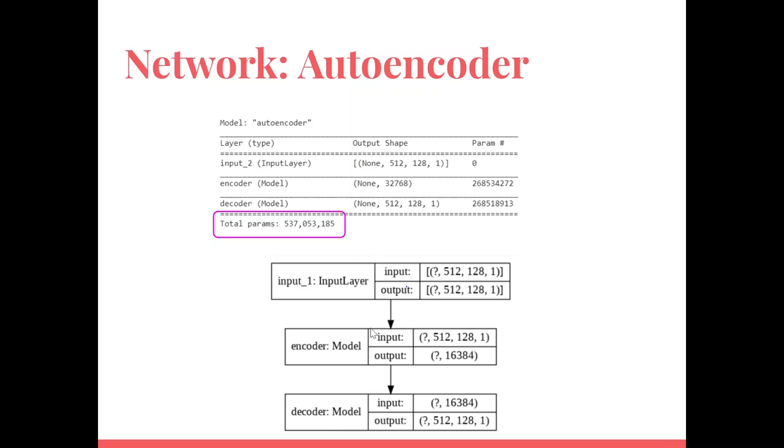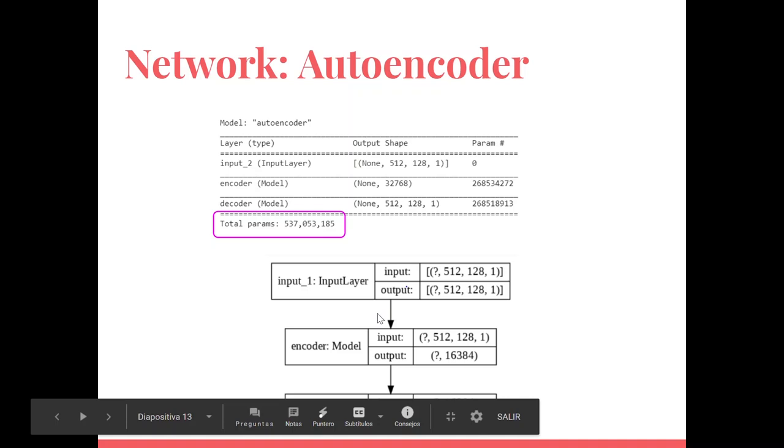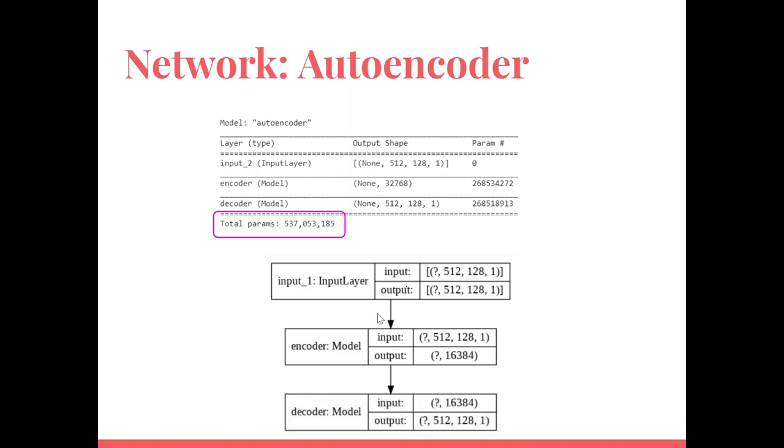As you can see, the general structure is as follows, with an input layer that takes the image, and then the encoder that transforms this image into a latent space, and finally the decoder takes this information on the latent space, and reconstructs an image that has the same shape than the input layer, that is 512 times 128, and in grayscale, we are not using RGB.